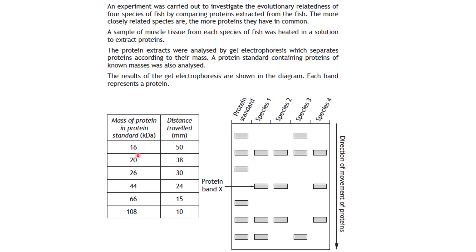Just to show you something related that might come up in the exam: gel electrophoresis. It's used to separate species by their genetics. What you're looking to see is how related different species are — the more matches there are, the more closely related they are. You can get gel electrophoresis to separate DNA fragments; here it's separating protein fragments. The more matches you have between species, the more closely related they are.